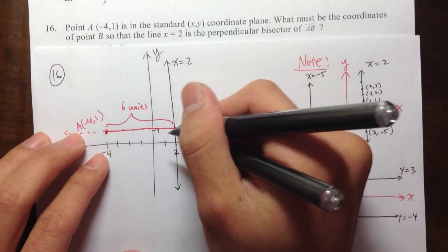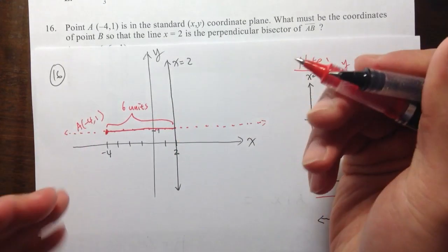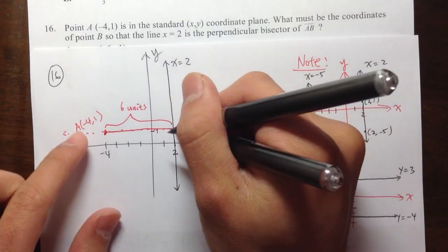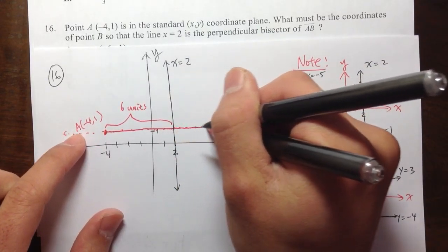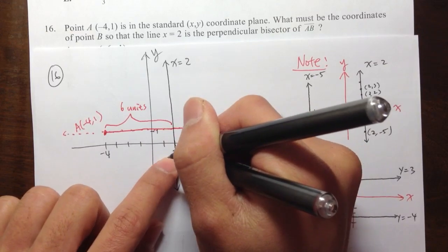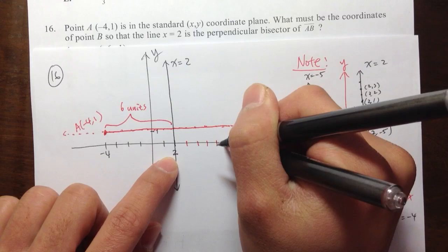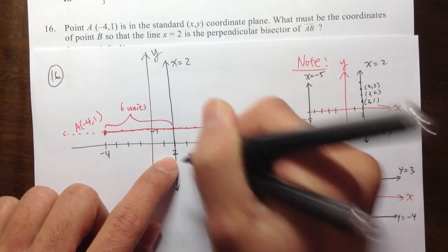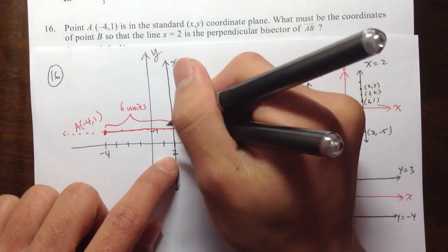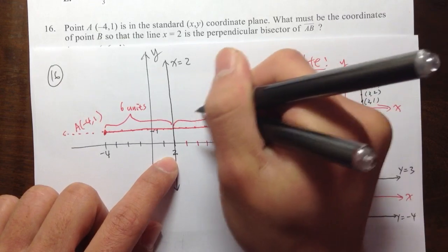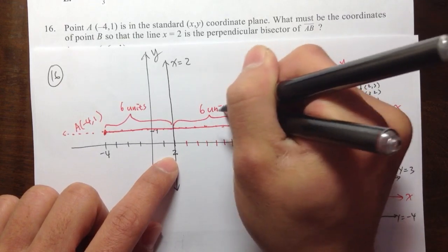I actually need to just go another six more units and that's how I can find my point B. Right? So if I go another six units, I'll start from here and then count. So I'll start with two. I need three, four, five, six, seven, eight. Right? So that'll be six units.